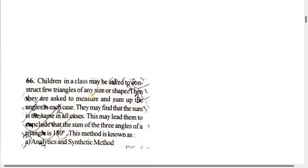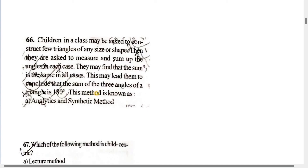Number 66: Children in a class may be asked to construct a few triangles of any size or shape. Then they are asked to measure and sum up the angles in each case. They may find that the sum is the same in all cases. This may lead them to conclude that the sum of the three angles of a triangle is 180 degrees.